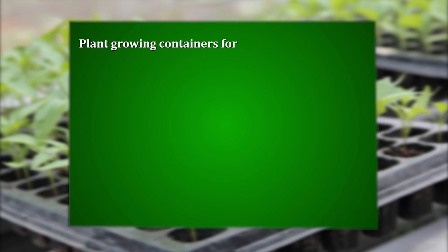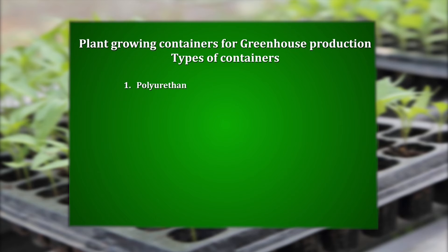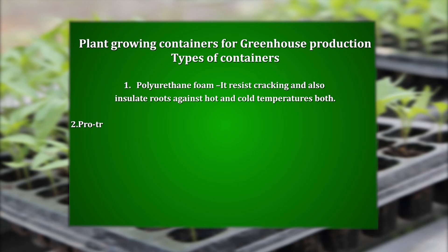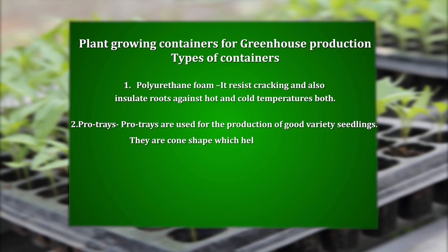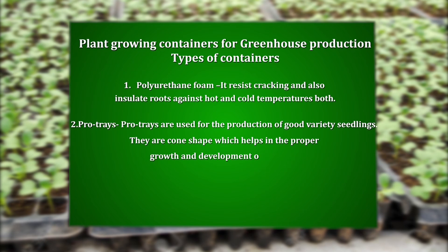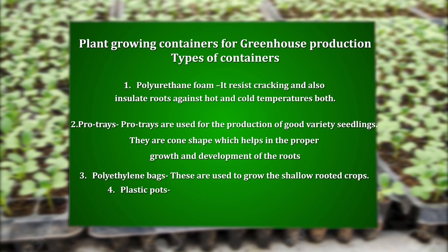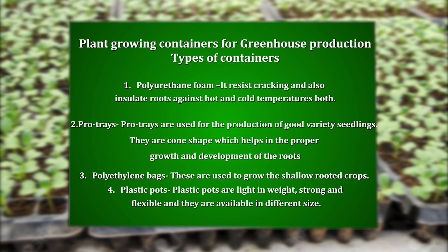Plants growing containers for greenhouse production. The first type is polythene bags, which are used to grow shallow-rooted crops. Next, plastic pots — these are light in weight, strong, and flexible, and they are available in different sizes. At the bottom of these containers, a small hole is provided for proper aeration and drainage.